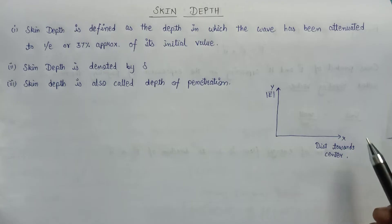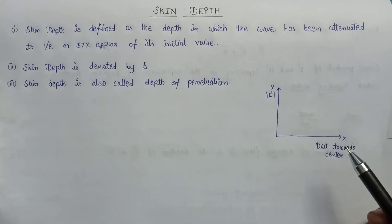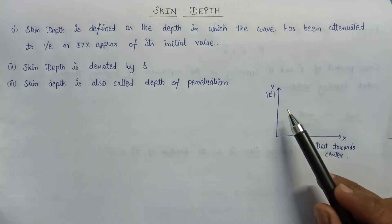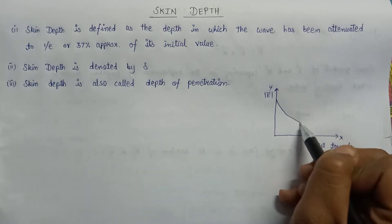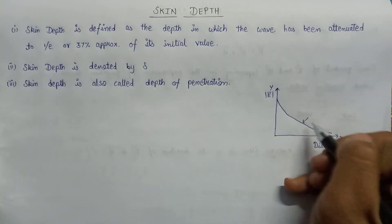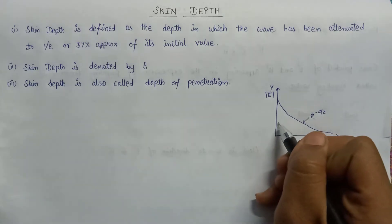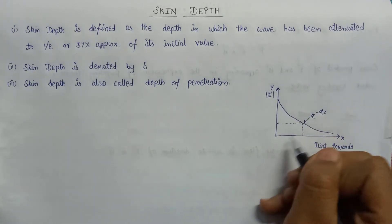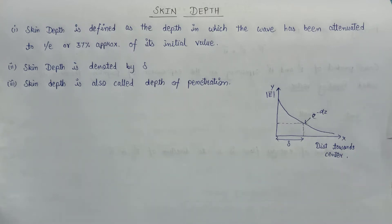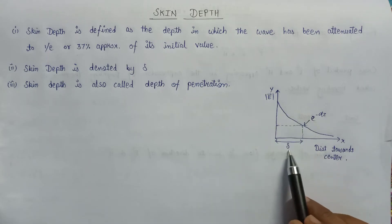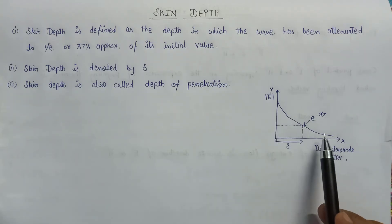Whenever the uniform plane wave propagates in the good conducting medium, we know that the good conducting medium has high conductivity and large conduction current. Therefore, the wave suffers several attenuations and its amplitude decreases. This decrease in amplitude is represented by the factor e to the power minus alpha Z. On the x-axis, this distance is delta, which represents the skin depth.